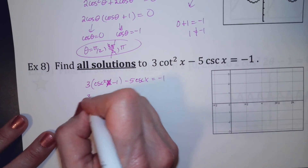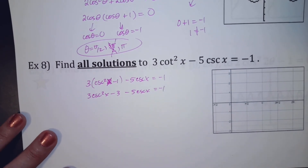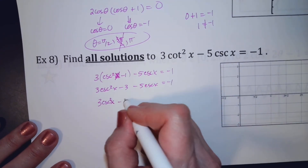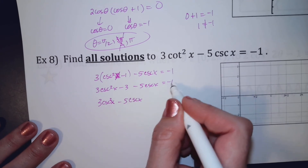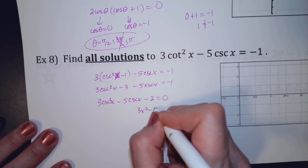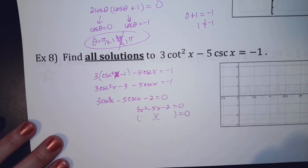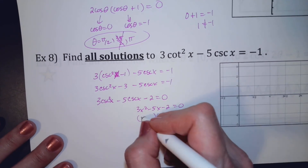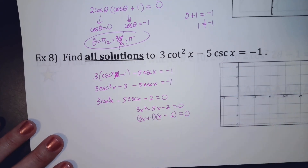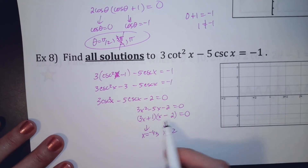Multiplying out: 3 cosecant squared minus 3 minus 5 cosecant equals negative 1. Let's put it in order: 3 cosecant squared minus 5 cosecant, and negative 3 plus 1 is negative 2. Make this into an algebra problem: 3x squared minus 5x minus 2. Factoring: 3x and x, with a 2 and a 1, minus and plus. So x equals negative 1/3 and x equals 2.